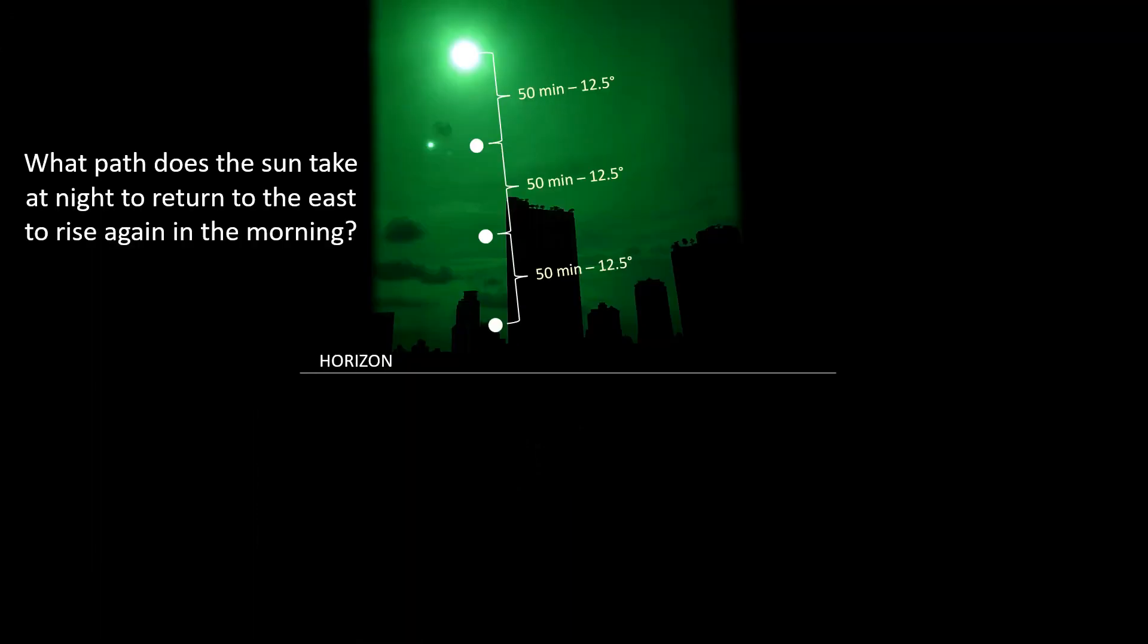Now we can ask the same simple question. What path does the Sun take at night to return to the East to rise again in the morning? This is not rocket science. All it takes is a little common sense to understand that the Sun is going to continue on that same path below the horizon.